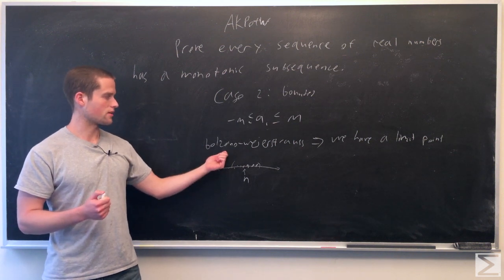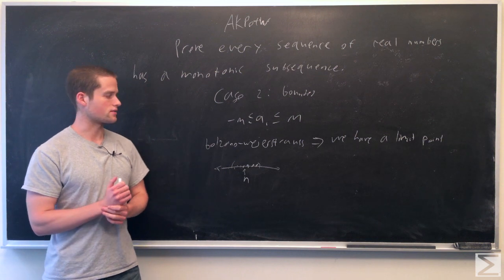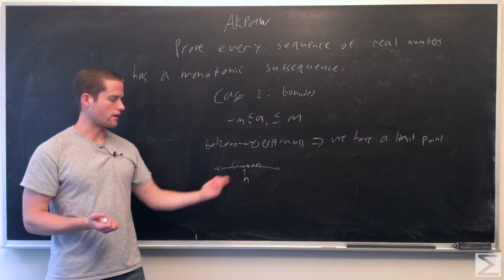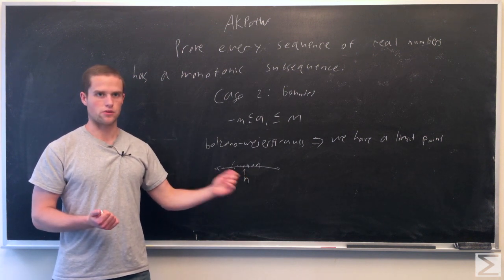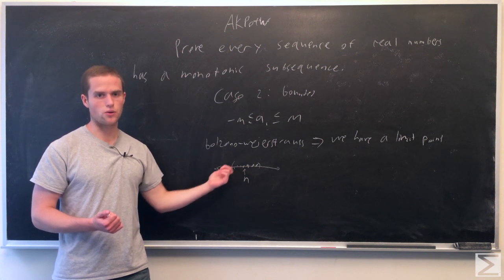By the Bolzano-Weierstrass theorem, we must have a limit point in this interval. Say this limit point is n. By the definition of limit point, for any neighborhood of n, we have infinite points in the neighborhood.